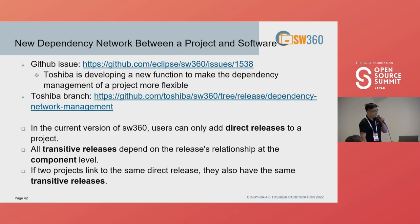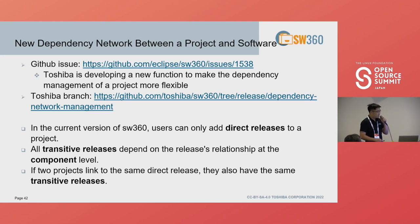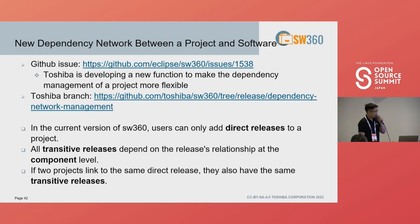The last feature is a new dependency network between project and software. Toshiba is developing a new function to make the dependency management of a project more flexible. In the current version of SW360, users can only add releases directly to a project, and all transitive release dependencies are set at the component level.